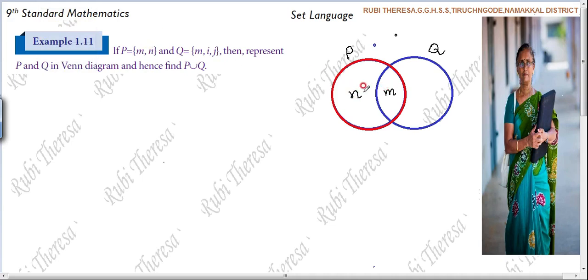So M comma N in the set P. In the set Q what are the elements? M, I, J. M is there in the set Q also. So what is the element? I, J. Here while you are writing the elements you should not put comma in the end.